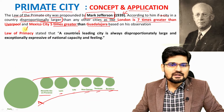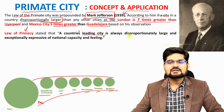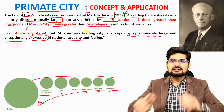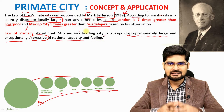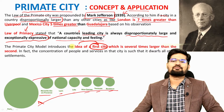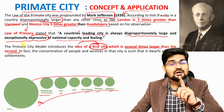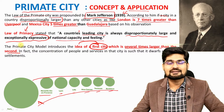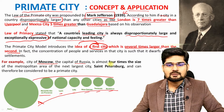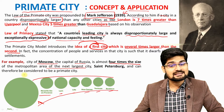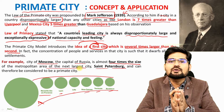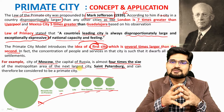The law of primacy states that a country's leading city is always disproportionately large and exceptionally expressive of national capacity and feeling — it is the single largest dominant city in the country. The primate city model introduces the idea of a first city that is several times larger than the second city, not just in population size but also in impact. For example, Moscow is almost four times the size of the metropolitan area of St. Petersburg.